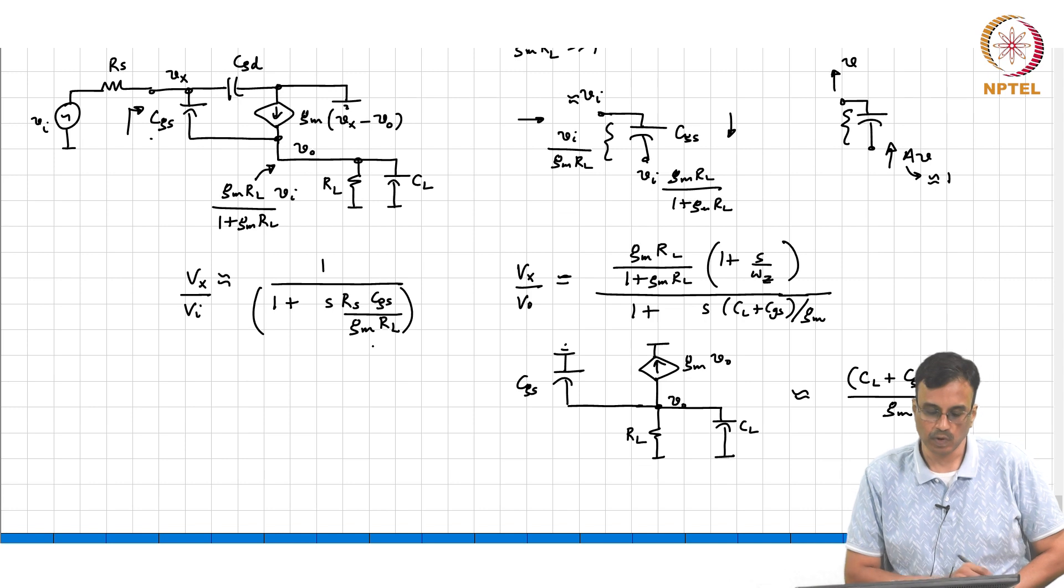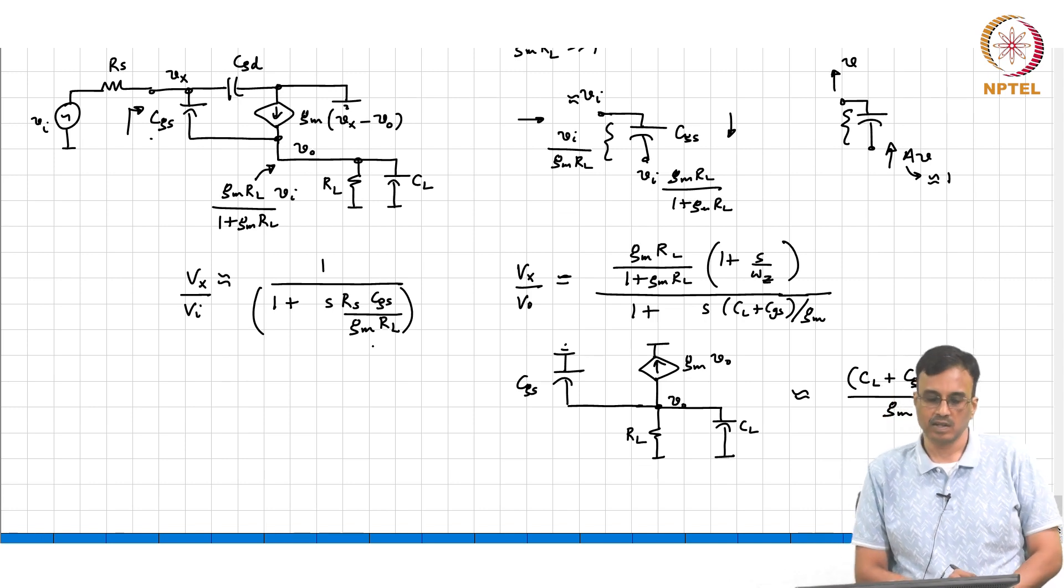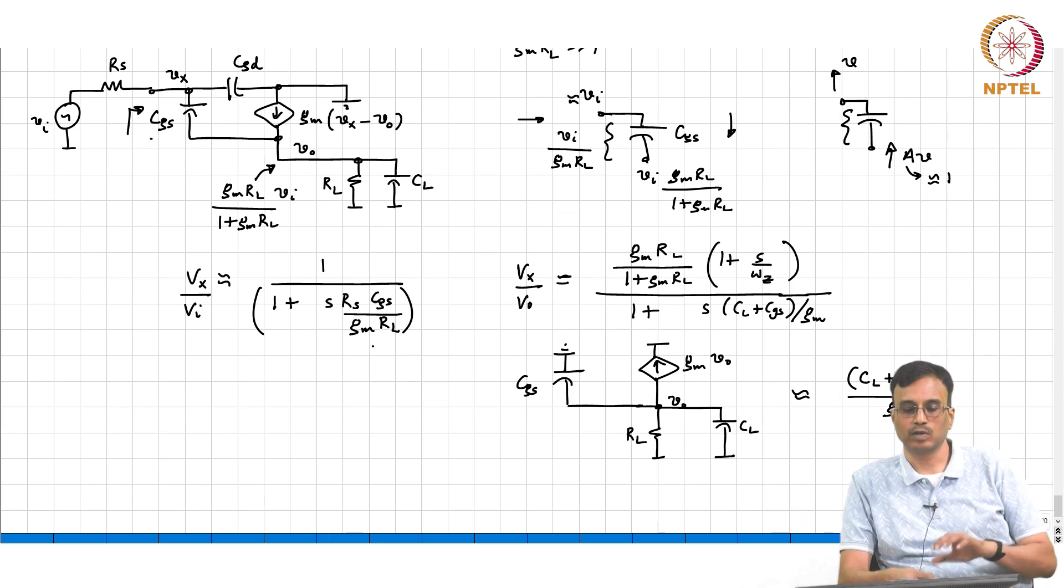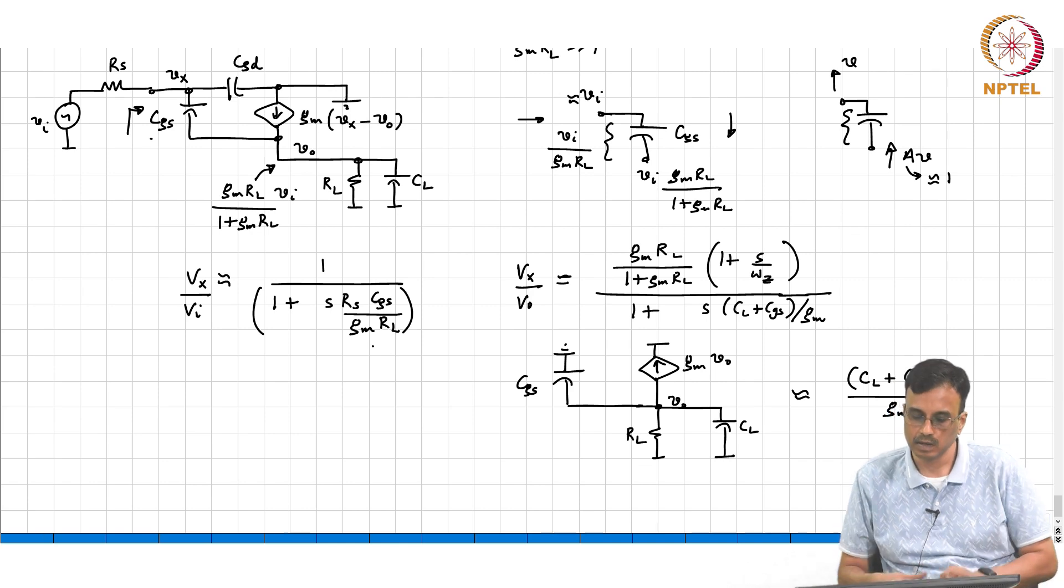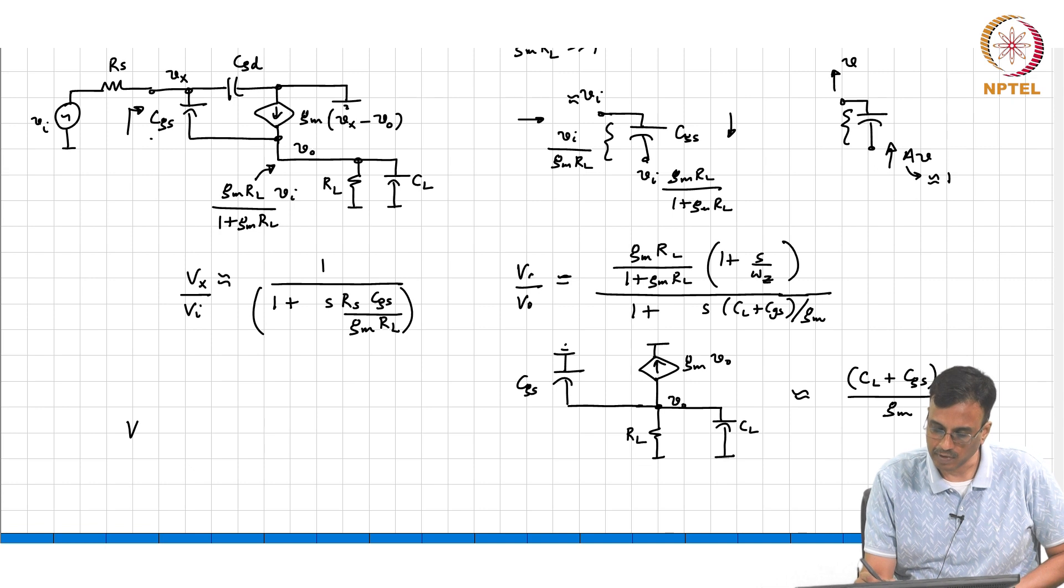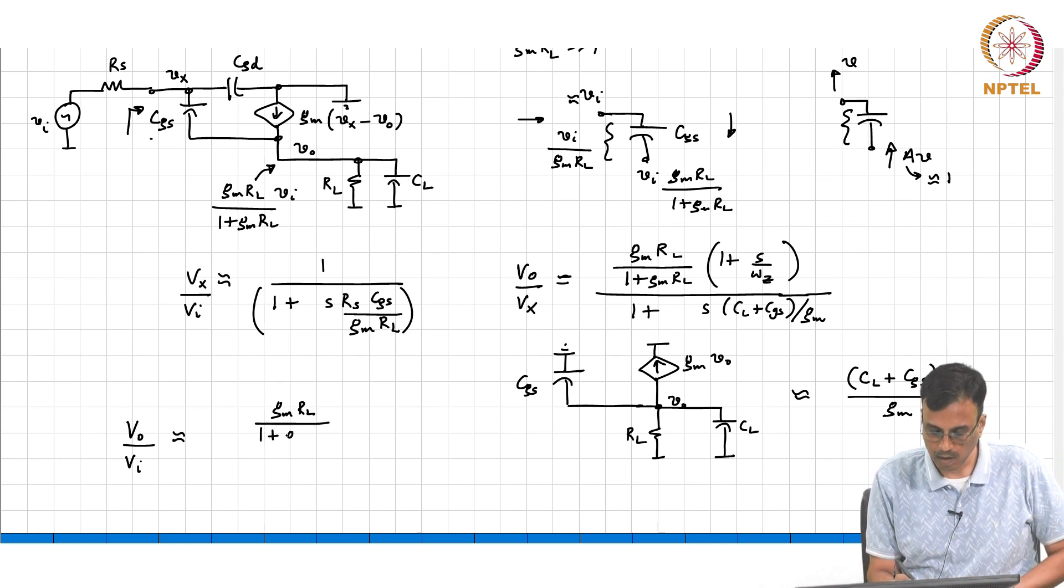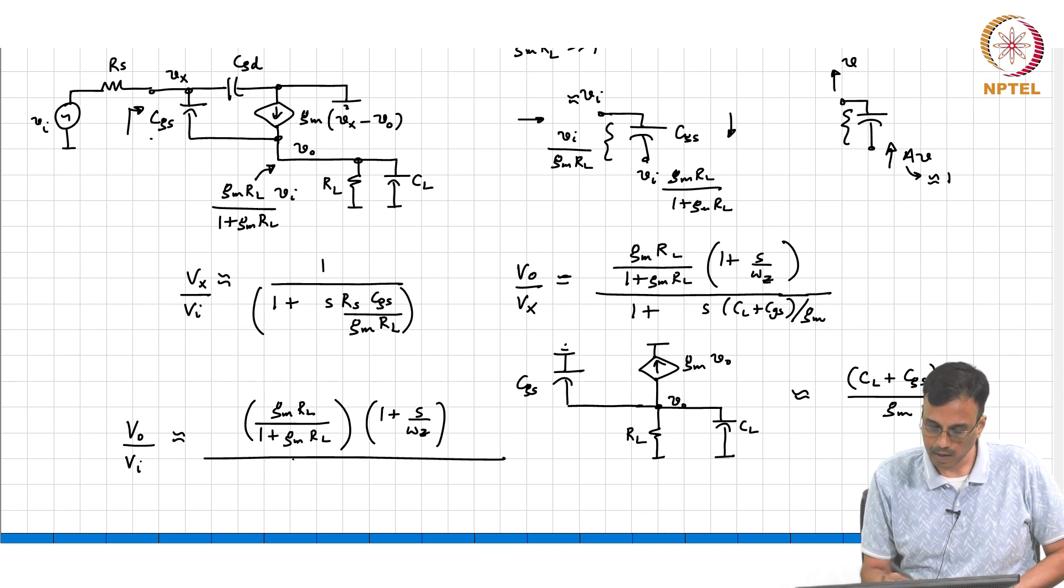You multiply both these guys. For the same RL when compared to a common source amplifier, what comment can we make about the bandwidth of the common drain amplifier? So VO by VX times 1 plus S over Omega_Z, divided by 1 plus S times CL plus CGS over GM plus RS*CGS over GM*RL.